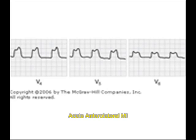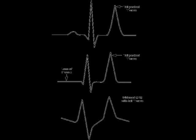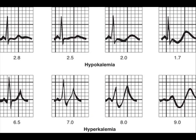Now let us see abnormalities in electrolyte disturbances. First, hyperkalemia. In hyperkalemia, you will see big tent-shaped T waves. You can see clearly here — the T wave is as big as the QRS complex. This is very characteristic of hyperkalemia, that is high potassium level in the blood. When you come to hypokalemia, that is low potassium level in the blood, you can see U waves. The QRS complex is followed by T wave, then that is followed by U wave. U wave is simply the wave that follows T wave.